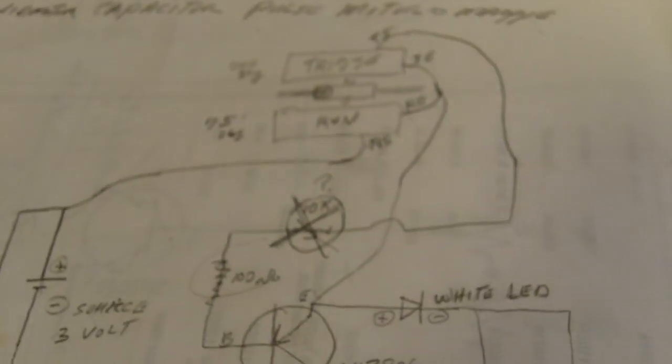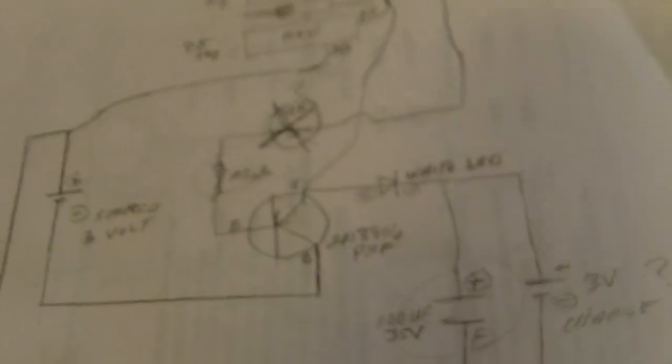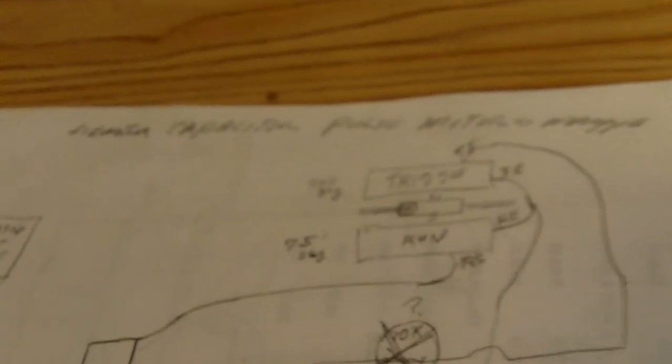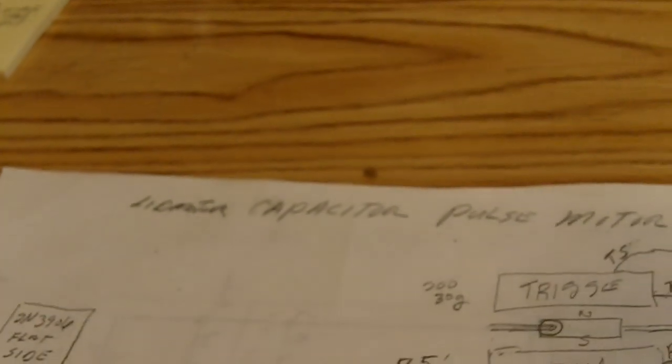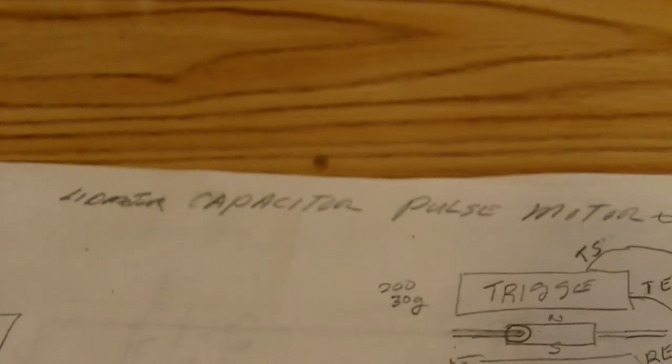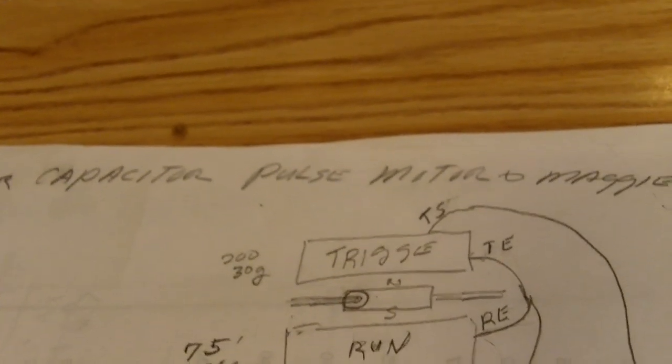This is the wiring diagram for it. I hope you can see that alright. If you go to LID Motor's channel, you can find it there. LID Motor capacitor pulse motor and MAGI. He does a very good drawing of it and an explanation of how it works.